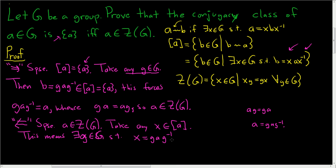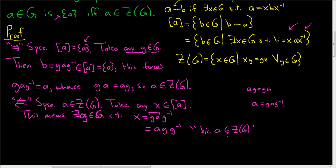But A is in the center of G, so A commutes with every element of G. So in particular, A commutes with little g. So g A g inverse is equal to A g g inverse. And this step is because A is in the center of G. And g times g inverse is simply the identity element, so that's A times the identity, which is A. So we showed that for any X in the conjugacy class of A, X must be equal to A. So this means that the conjugacy class of A is equal to the singleton set containing A.